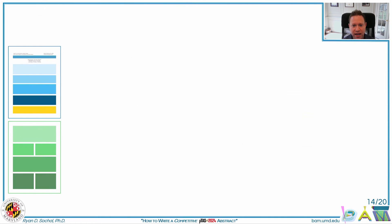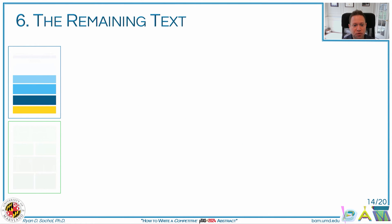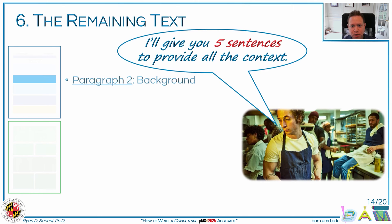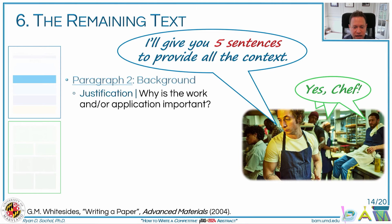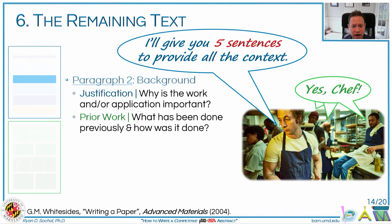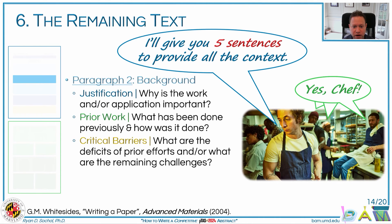Now we get back into the remaining text, which often comes down to three main paragraphs. Paragraph two focuses on background and should be five sentences at maximum. The idea is to highlight the justification for why the work or application is important, adequately discuss prior work, and then move into the critical barriers for this work.